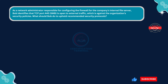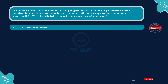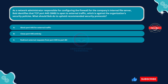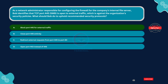Next question. As a network administrator responsible for configuring the firewall for the company's internal file server, Bob identifies that TCP port 445 is open to external traffic, which is against the organization's security policies. What should Bob do to uphold recommended security protocols? Option A, block port 445 for external traffic. Option B, close port 445 entirely. Option C, redirect external requests from port 445 to port 80. Option D, open port 443 instead of 445.